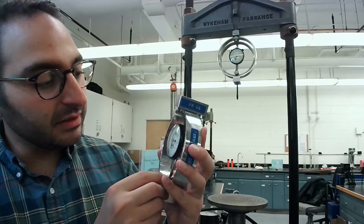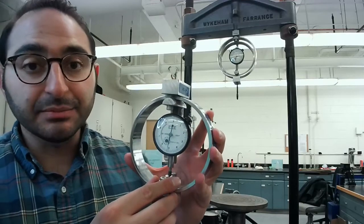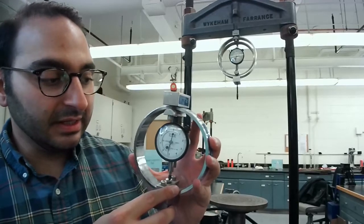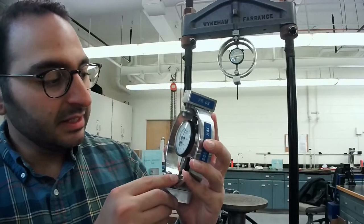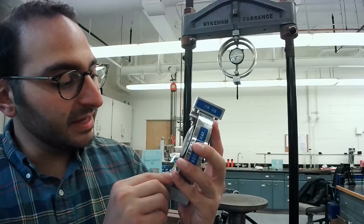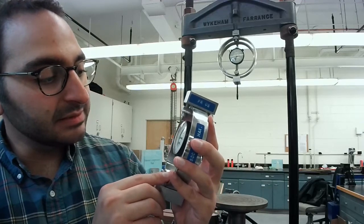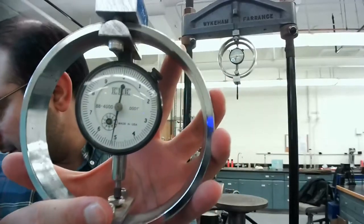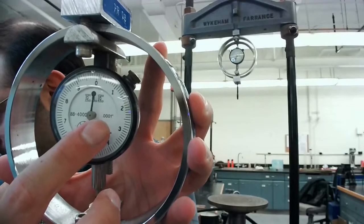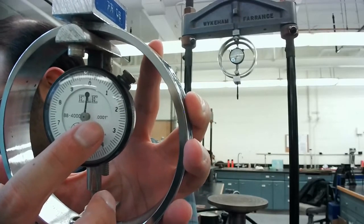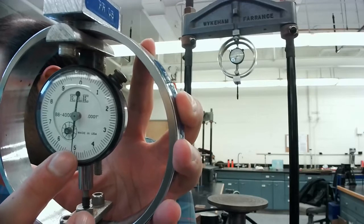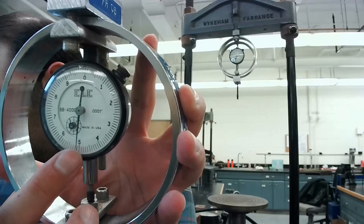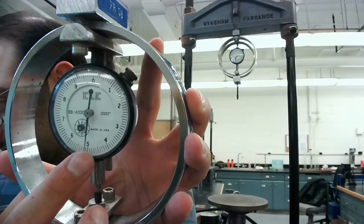Every tick mark on the load ring has a particular measurement. For example, this load ring, every single tick mark is measuring 0.0001 inches. I'll try to show this to you. That 0.0001 inches is what you'll be measuring as the tick goes from, for example, five to the next tick mark.